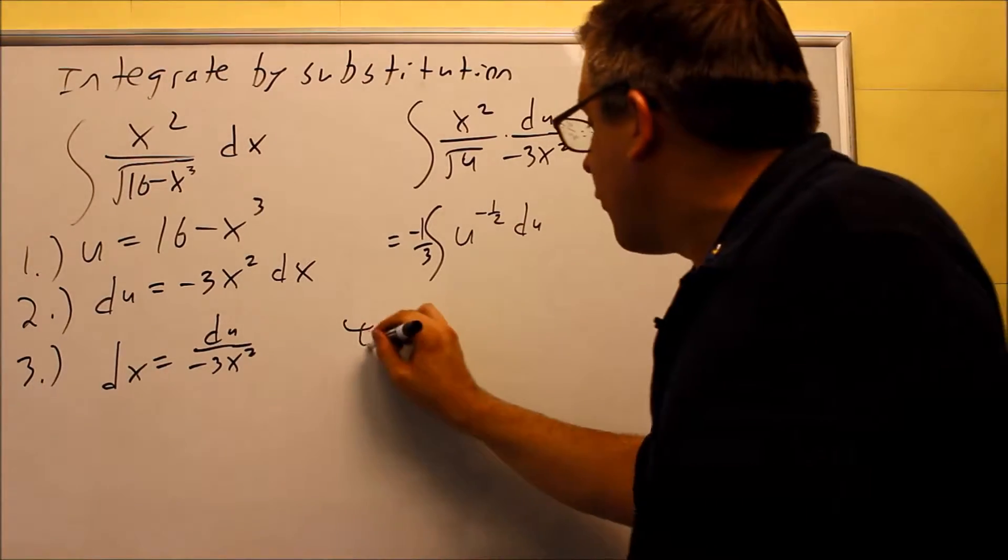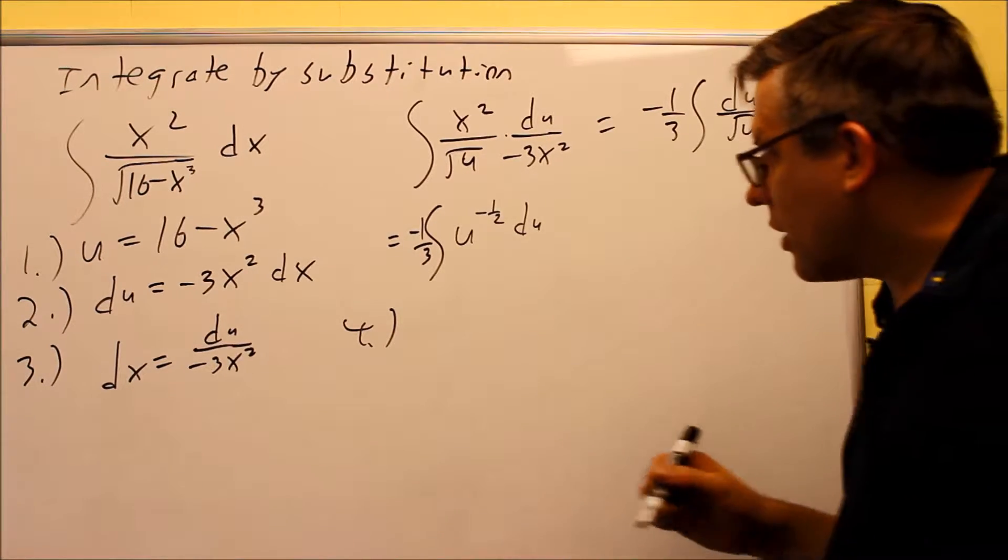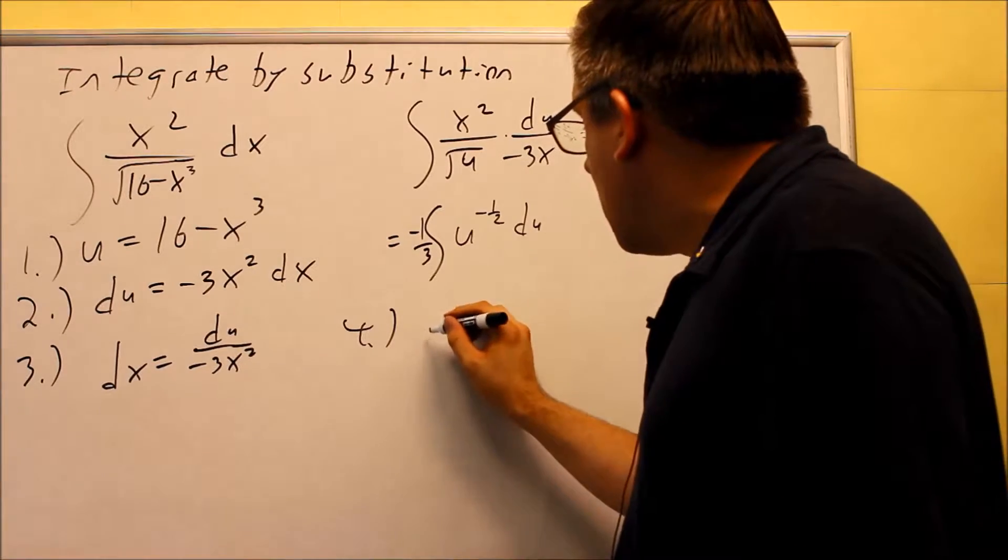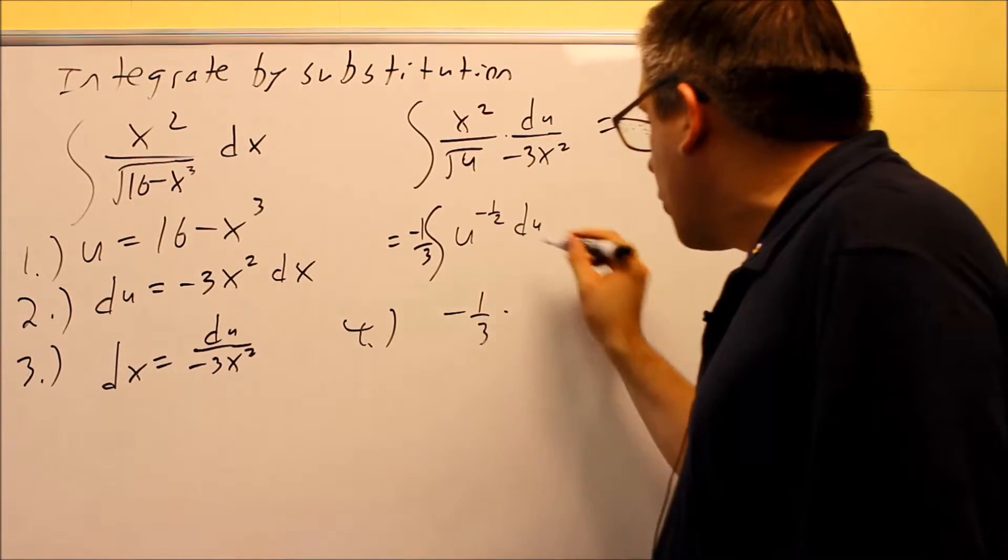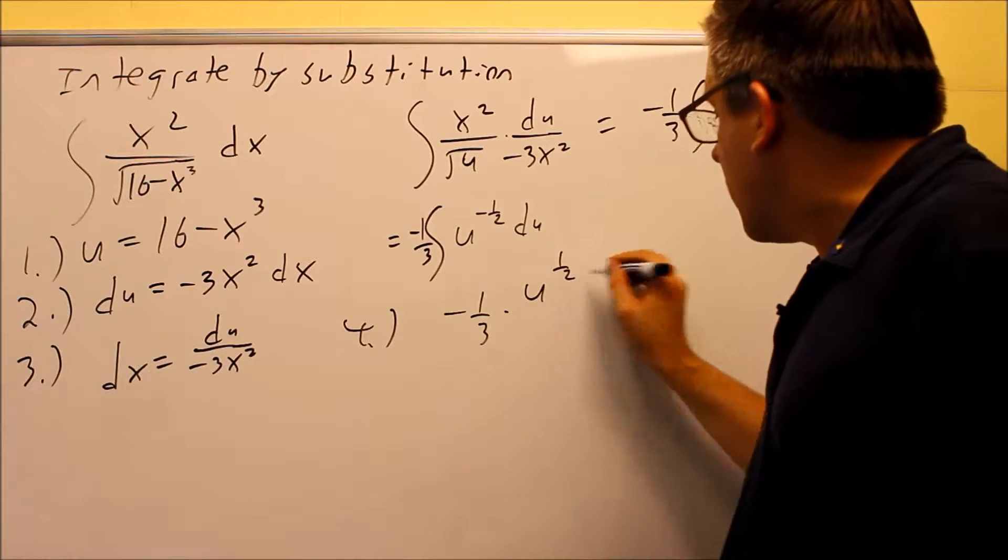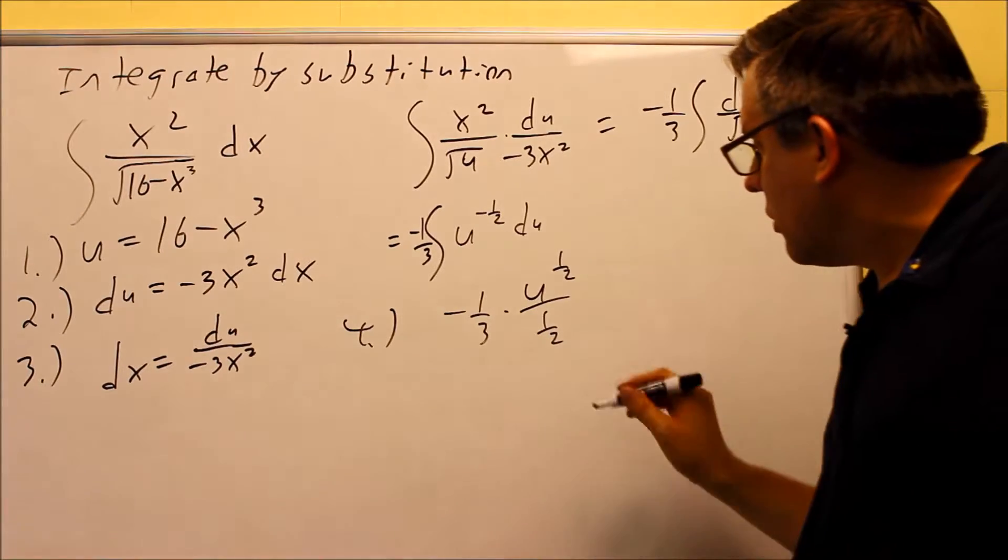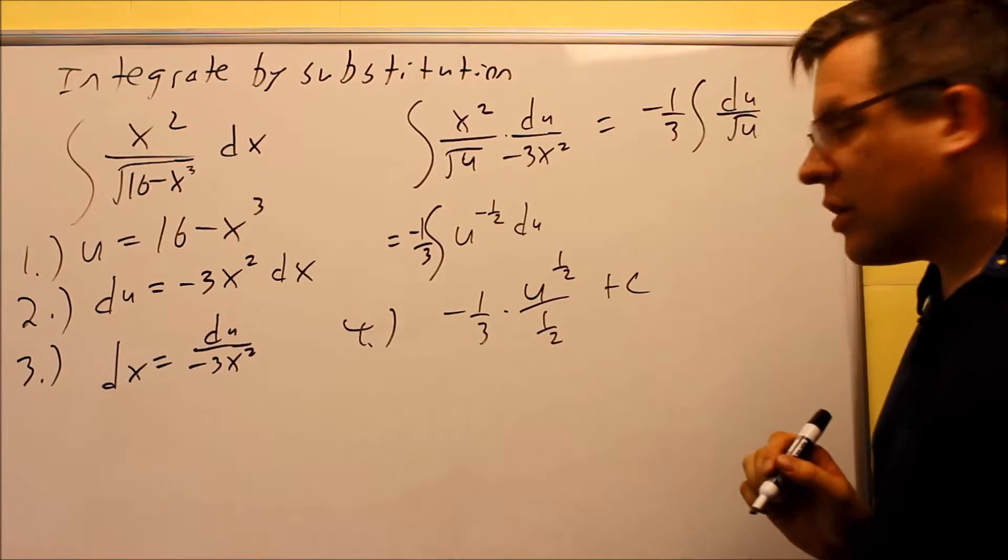And I'm finally ready for step four. Step four is where you actually take the anti-derivative and substitute the u back in. So for this, we have negative one-third, and then I'm going to work with this one. I have u to the positive one-half, divided by one-half, raise the power by one, divide by the new power, don't forget about the plus c.